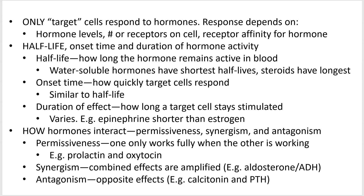Synergism means hormones work better together. Aldosterone and ADH — anti-diuretic hormone — both act to limit water loss. Aldosterone reduces urine output, ADH reduces urine output, and when both are present together you really won't produce urine. Lastly, antagonism means hormones work against each other. Glucagon and insulin are one example; calcitonin and parathyroid hormone are another. Calcitonin increases bone density while parathyroid hormone removes calcium from bone — they work in opposite directions.